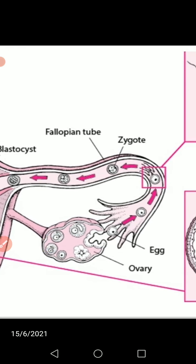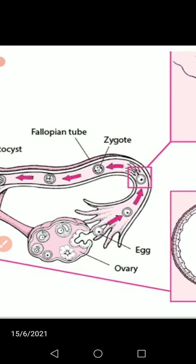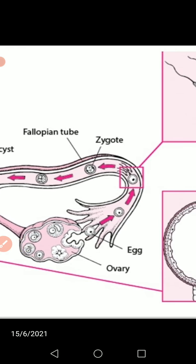You can identify the fallopian tube, isthmus, and ampulla on the diagram. In this region only — the ampullary-isthmic junction — will fertilization take place.